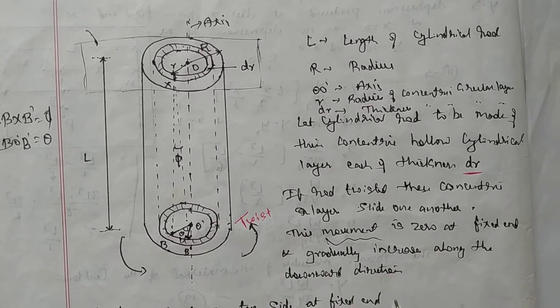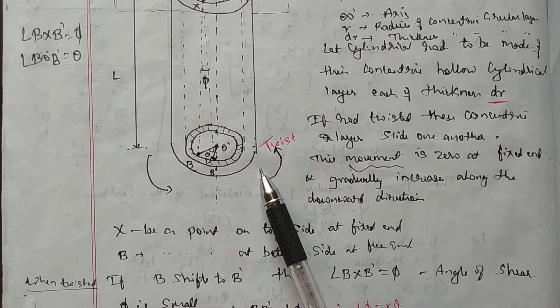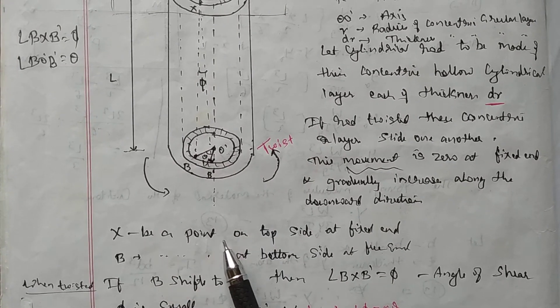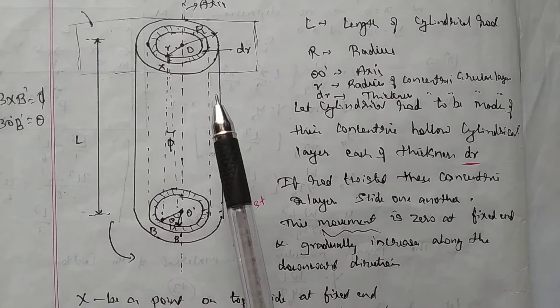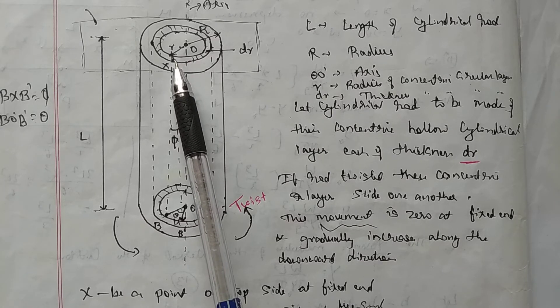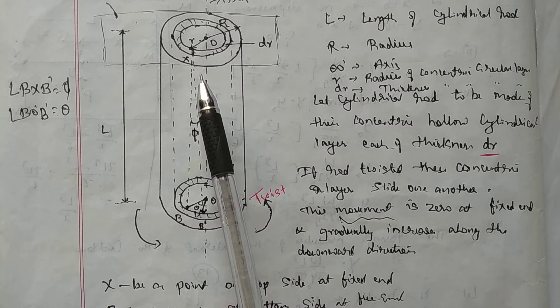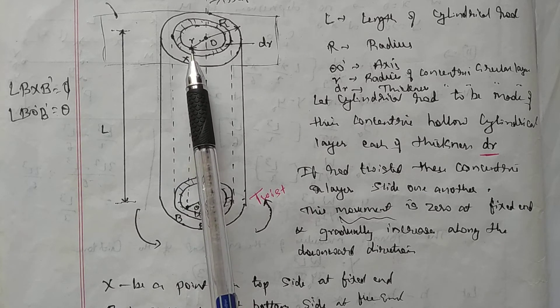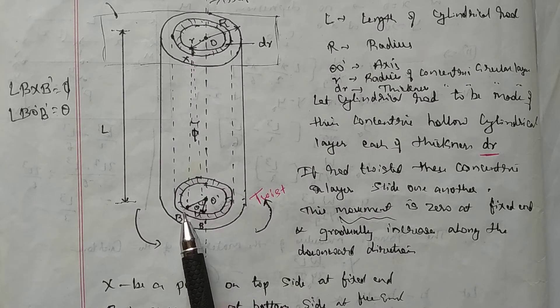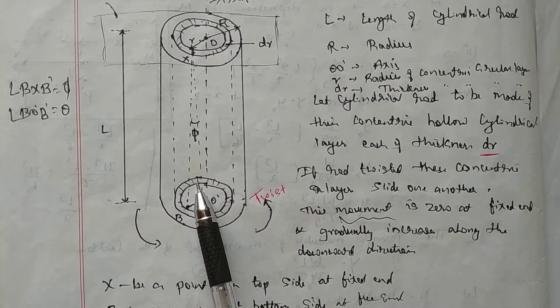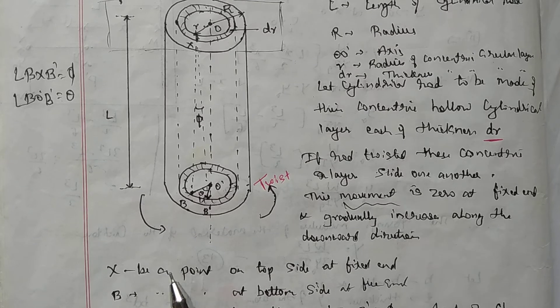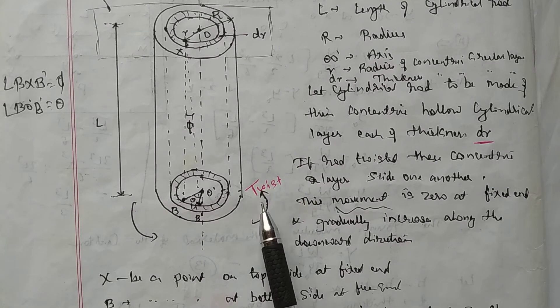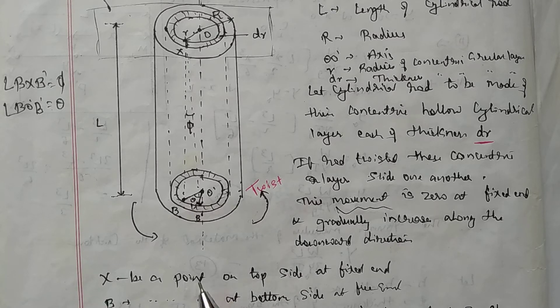Let X be a point on the top side at the fixed length on the concentric layer. Let X be a point under consideration, and similarly B be another point at the bottom side at the free end. X is at the top end which is fixed, and B is at the bottom which is at the free end. So when the cylindrical rod is twisted, then what happens? This B shifts to B dash.